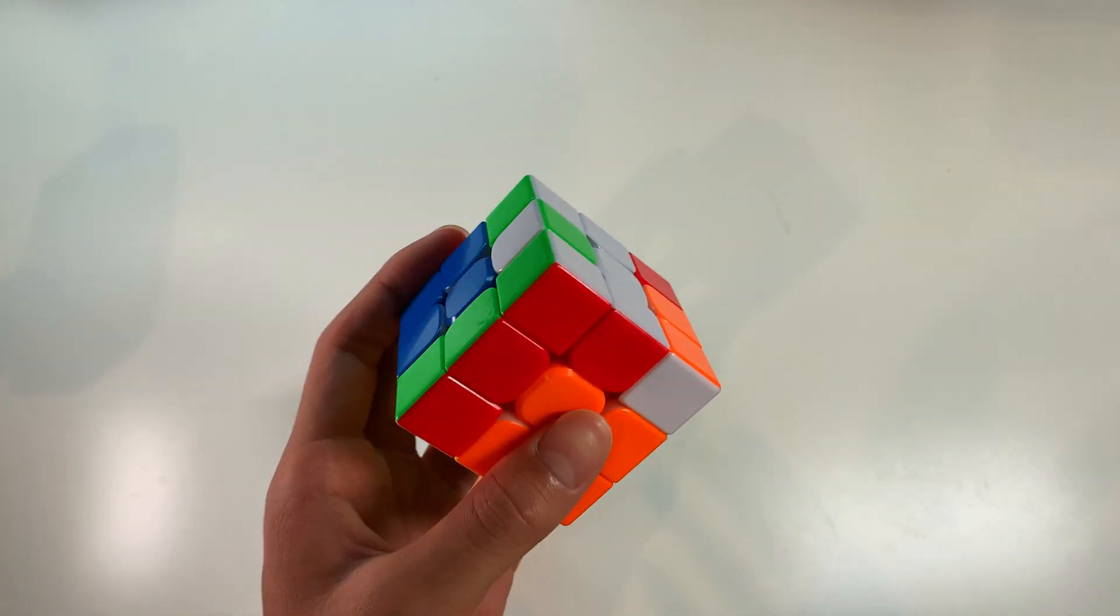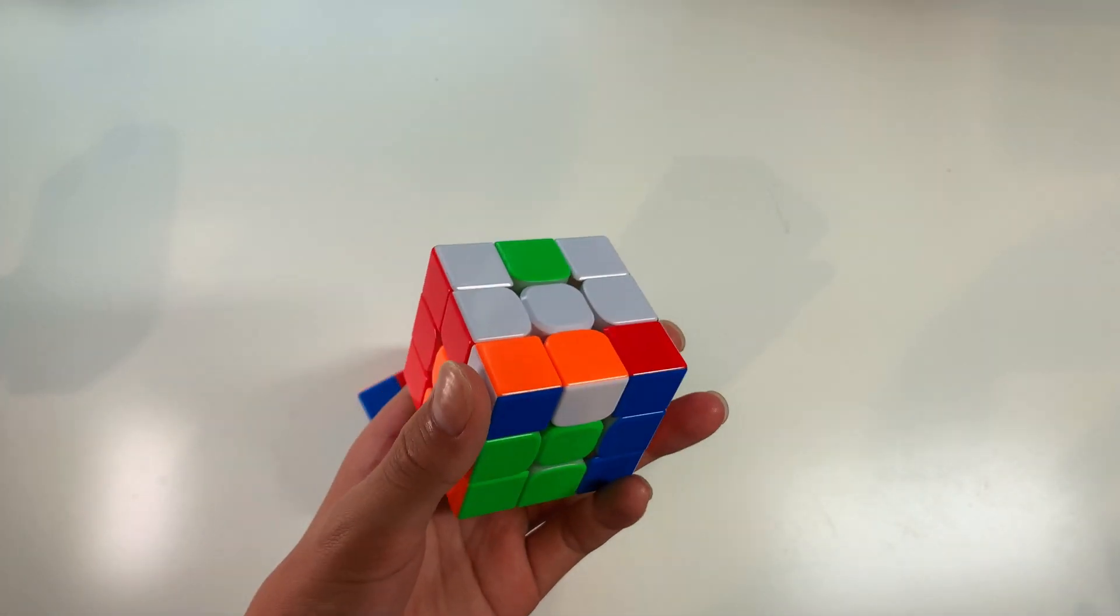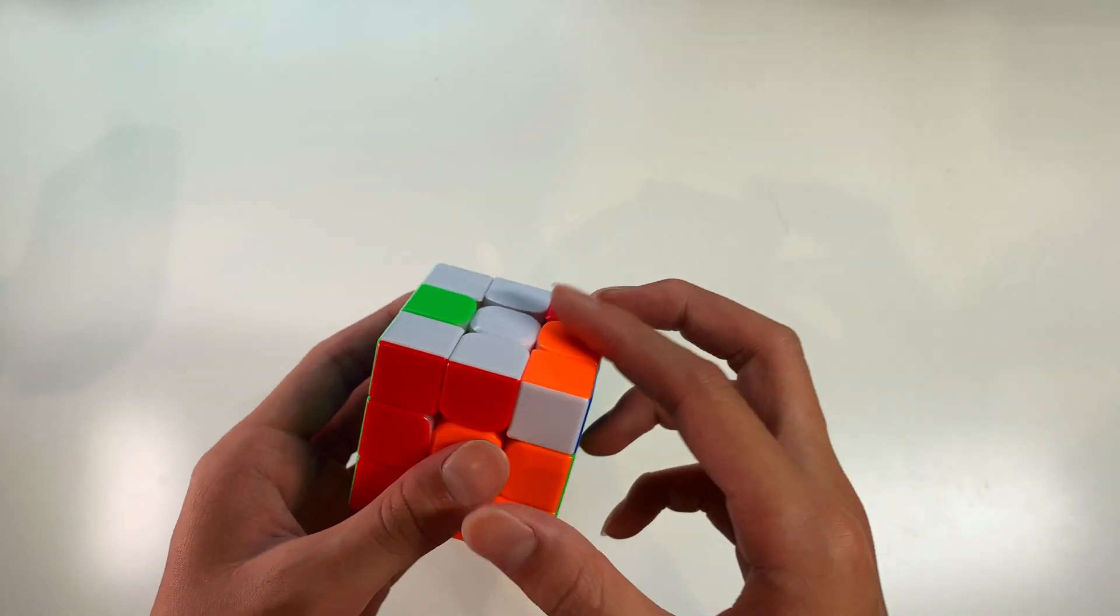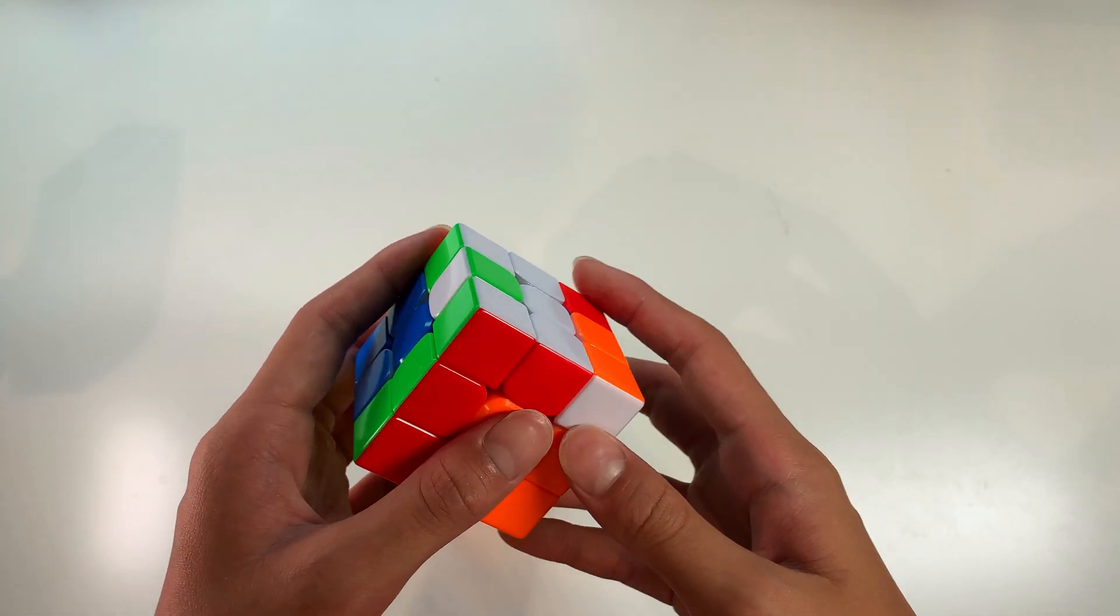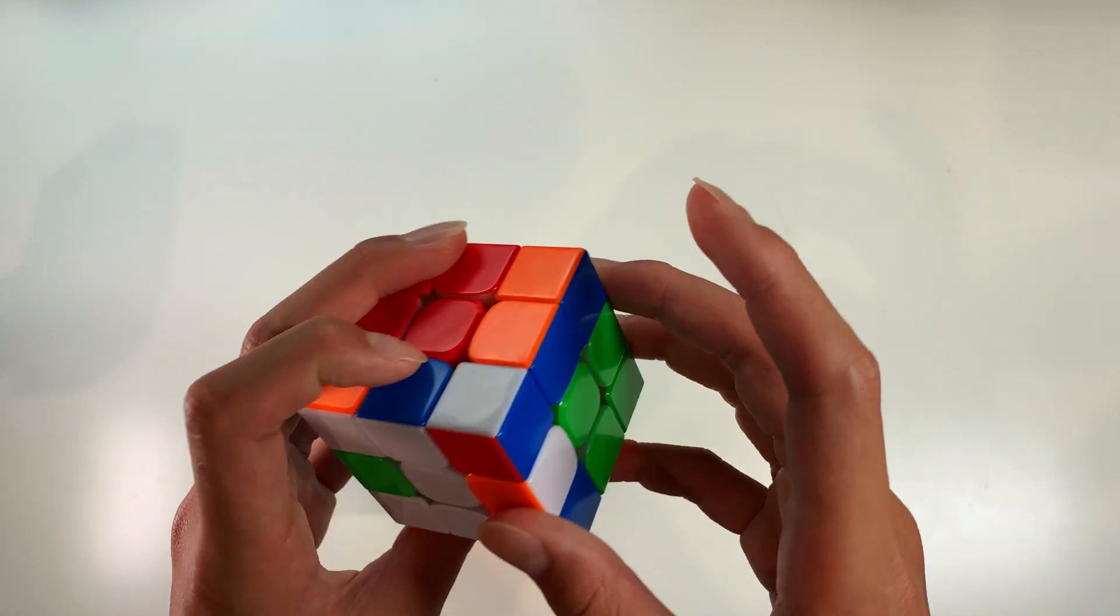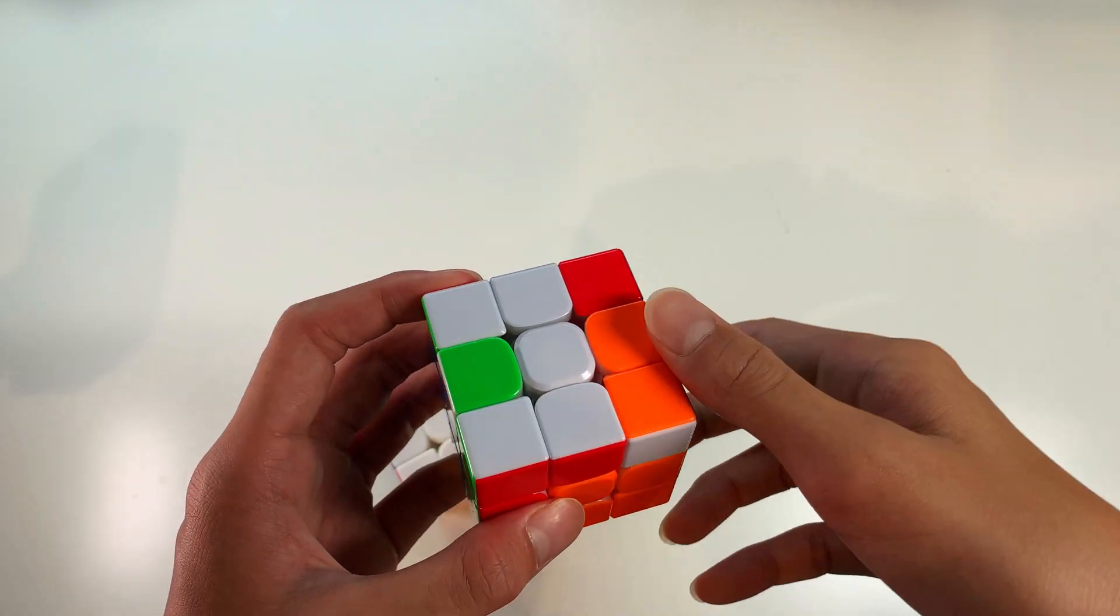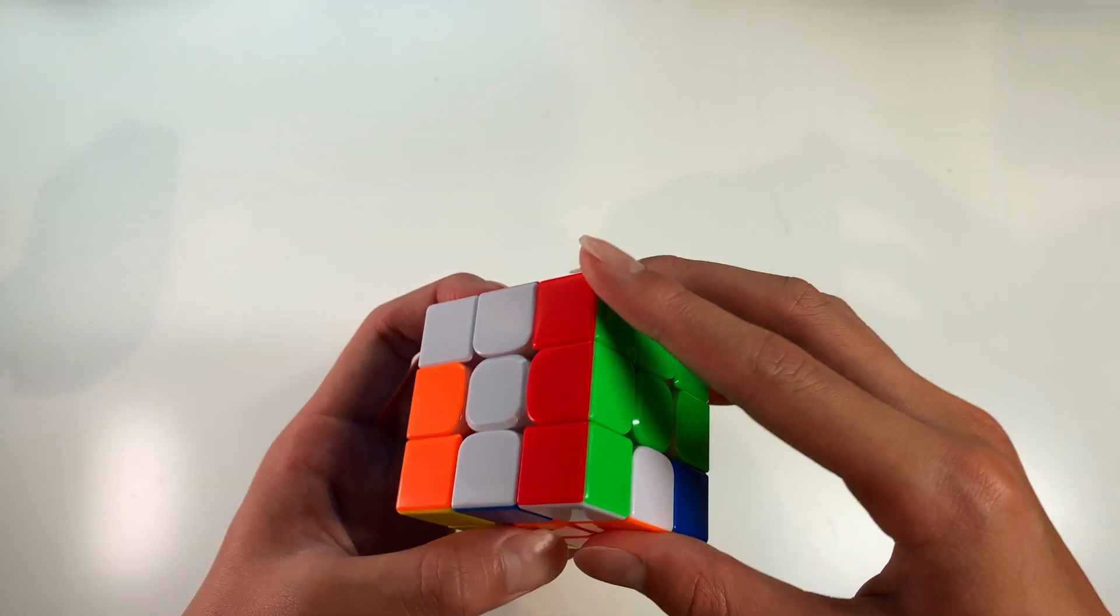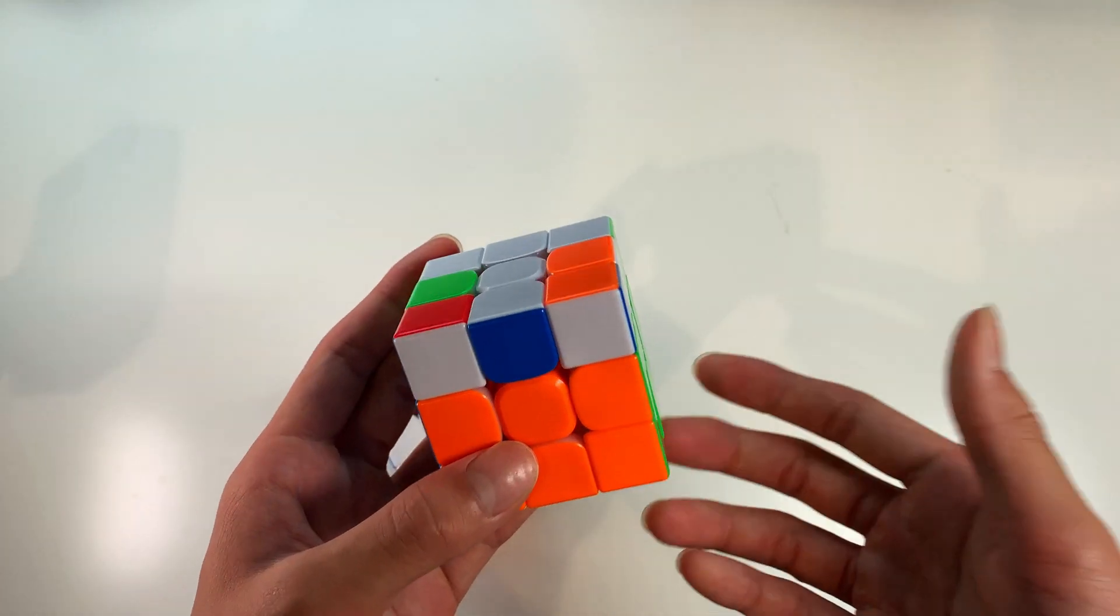So this is the last case and I actually showed this in my video on how to solve wrongly inserted F2L pairs, which you can look at by visiting the card at the top right hand corner or following the link in the video description. So what you are going to do in this case is swapping this pair with this pair. So the algorithm is actually R', L and now you can just do a Y, R, U2 to swap both of them and reverse those two moves.